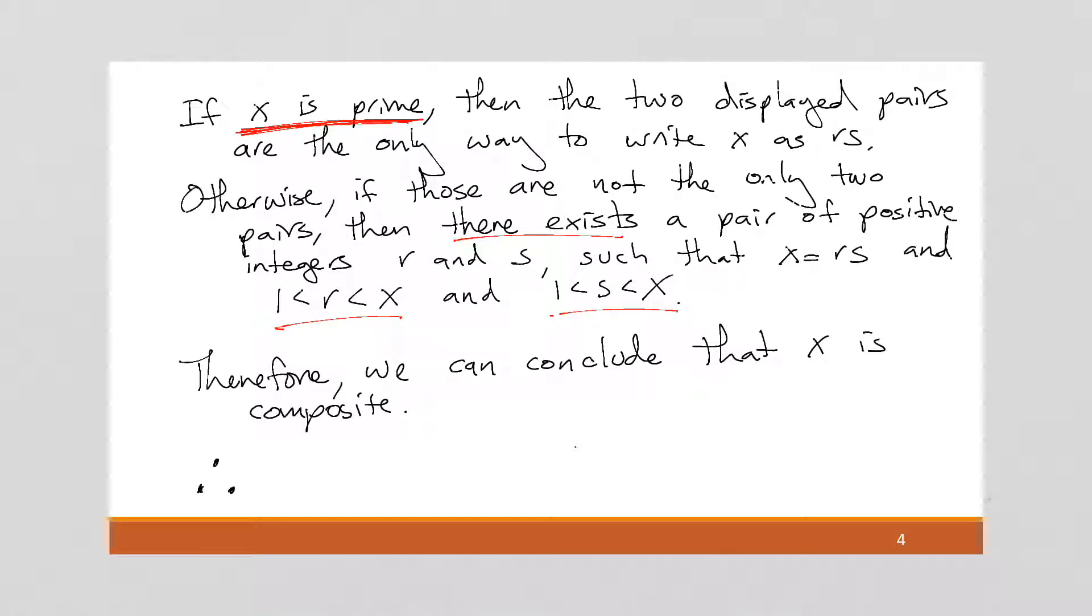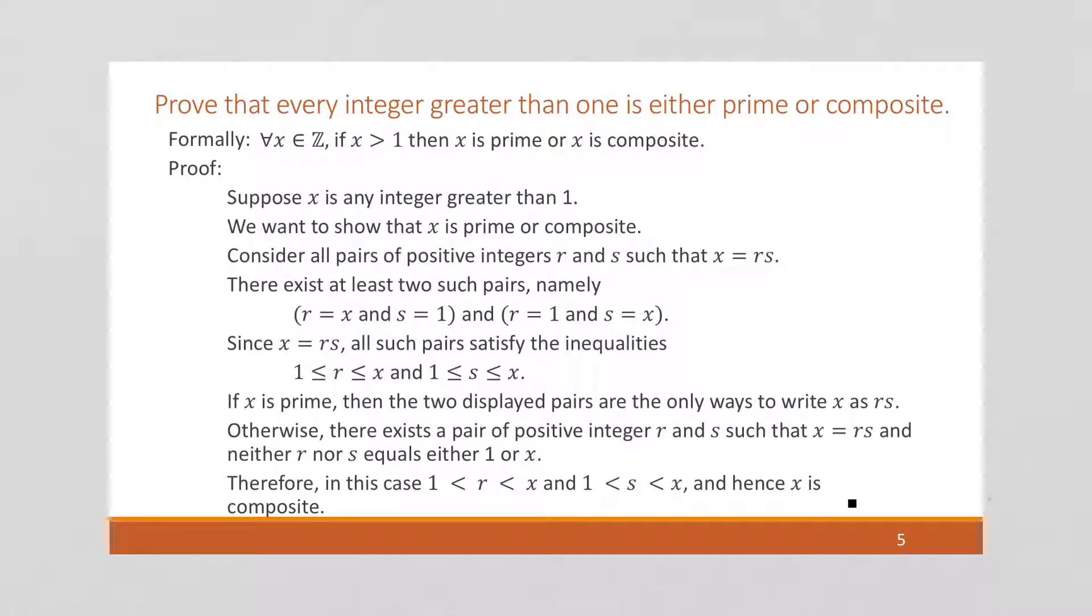So therefore, this is another way of writing therefore, all positive integers X are either prime or composite. Okay, so this is the proof. Here again is a formal written way of writing, or written version, typed up version. It looks like I did not conclude at the end what we were trying to prove. So let's add that in. Therefore, X is prime or composite.